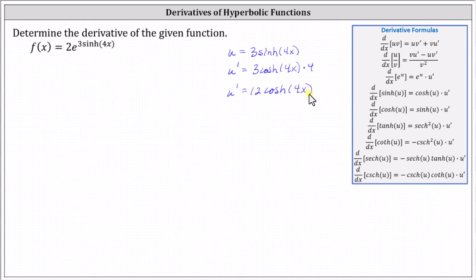From here, if it's helpful, we can now write the given function as two e to the u and differentiate with respect to x. This indicates that f prime of x is equal to two e to the u times u prime using our derivative formula.